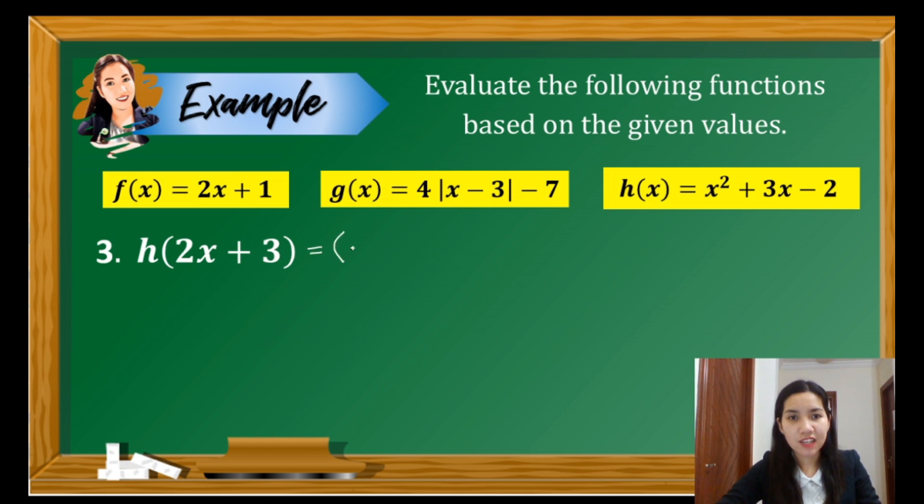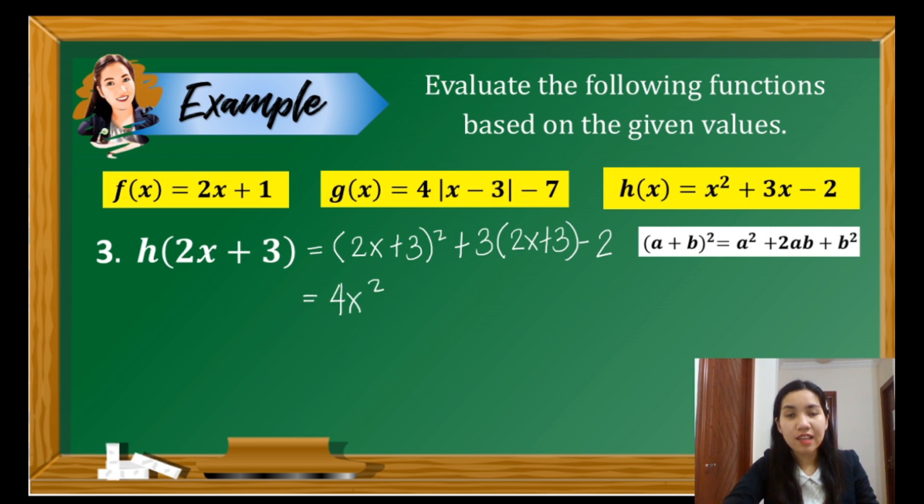So this gives us (2x + 3)² + 3(2x + 3) - 2. Here, we have to recall how to square a binomial. So when we square a binomial, we have to square the first term. So we have 4x². Next, we have to get twice the product of the first and the last terms. So we have 12x. And for the last term, we have to square 3. So we have 9.